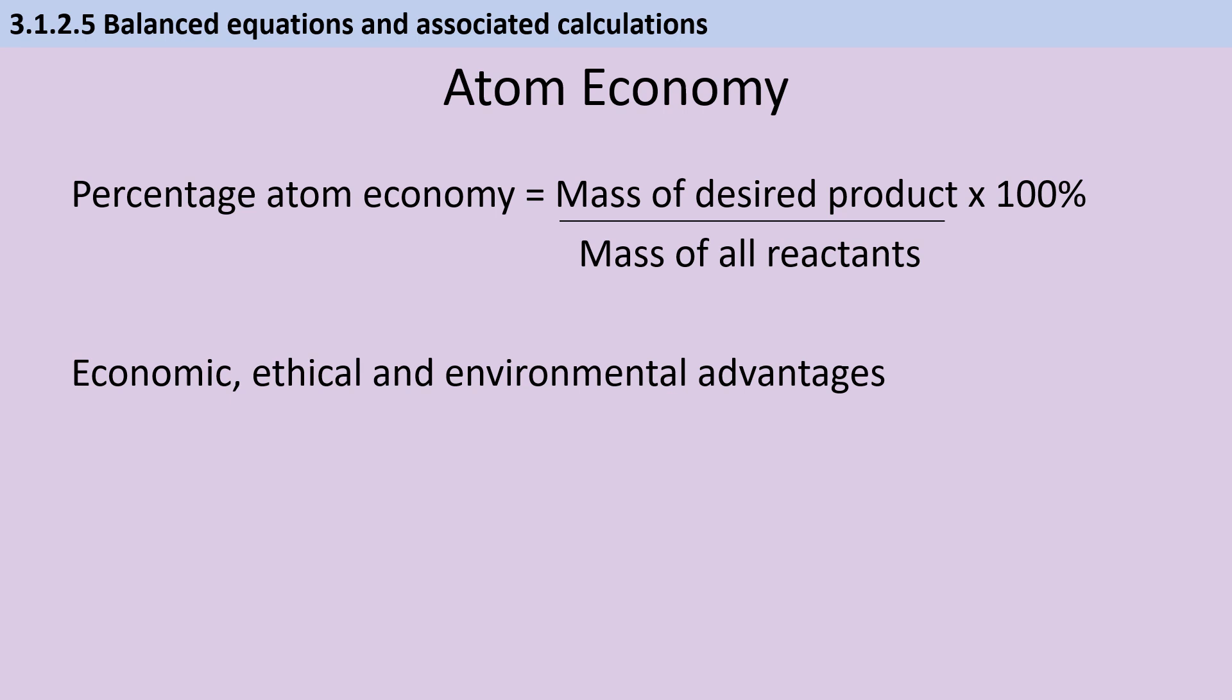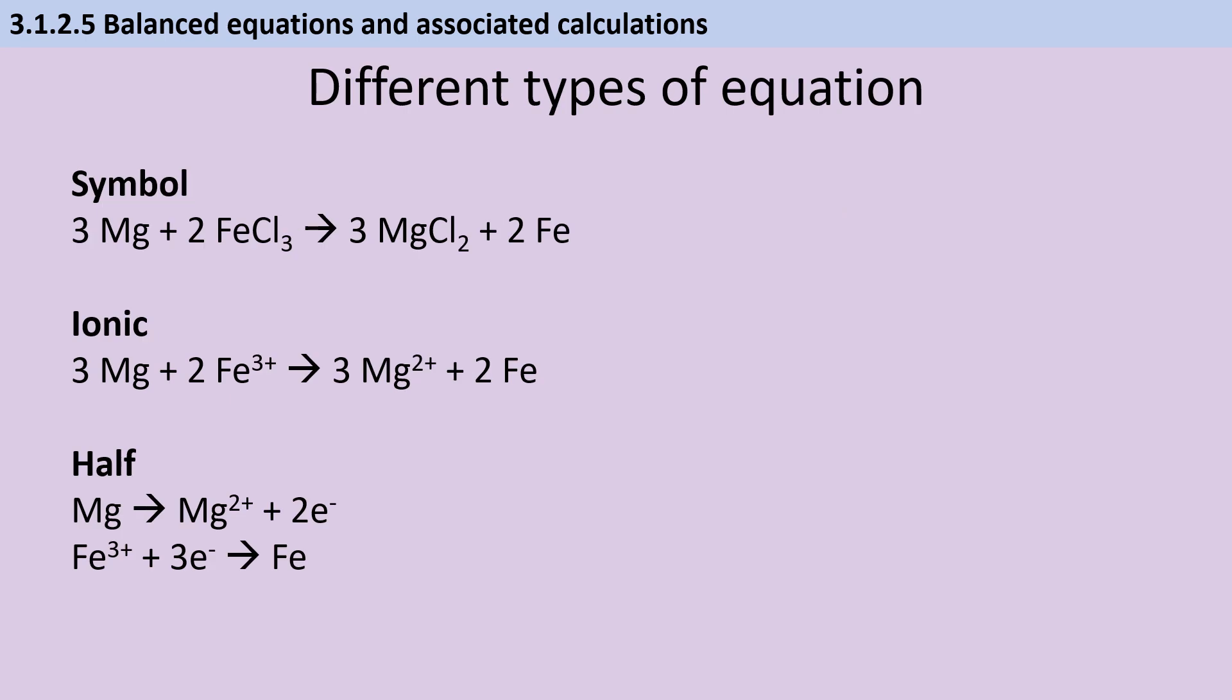Atom economy is a measure of what proportion of the reactants I started with actually ended up in my useful product as opposed to in a byproduct that I can't use. Having a reaction with high atom economy is desirable because it's going to save me money. It's going to mean that resources are better preserved, and it's probably going to save energy as well and generally be better for the environment. In addition to balanced symbol equations, you may be asked to write ionic equations and half equations. We'll look at half equations in more detail when we get to the redox topic, but remember that for an ionic equation you want to start out with your symbol equation, take any ionic substances and break them down into the ions that make them up. So here that would be iron ions and chloride ions and the magnesium ions and chloride ions. And if something doesn't change oxidation state between the left and the right side, then you remove it because it's a spectator ion and it doesn't need to be included in the ionic equation.